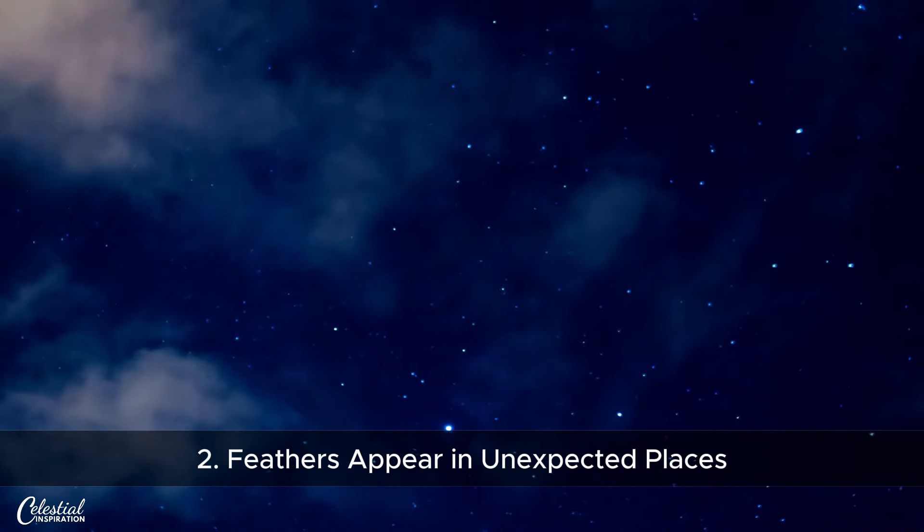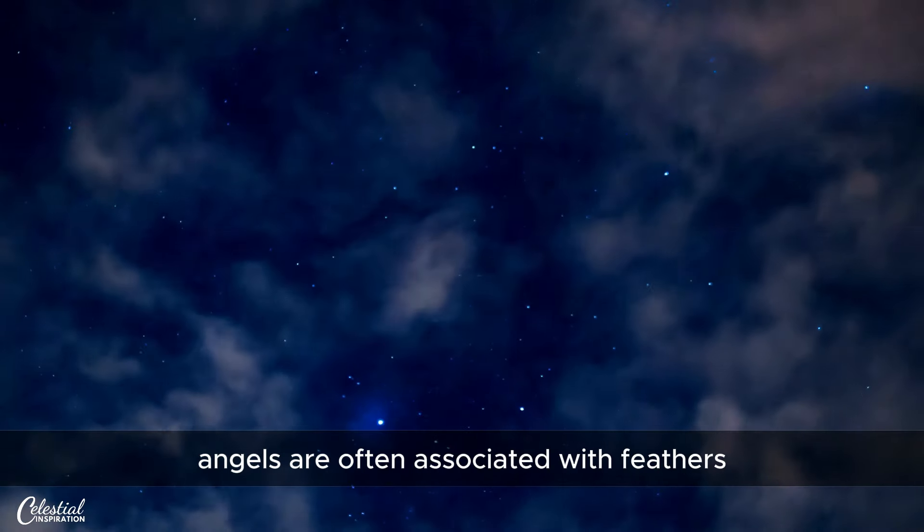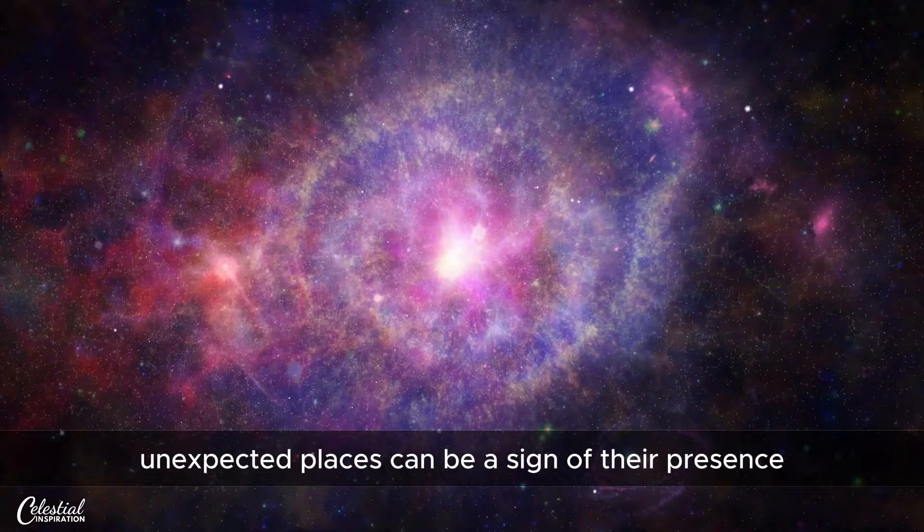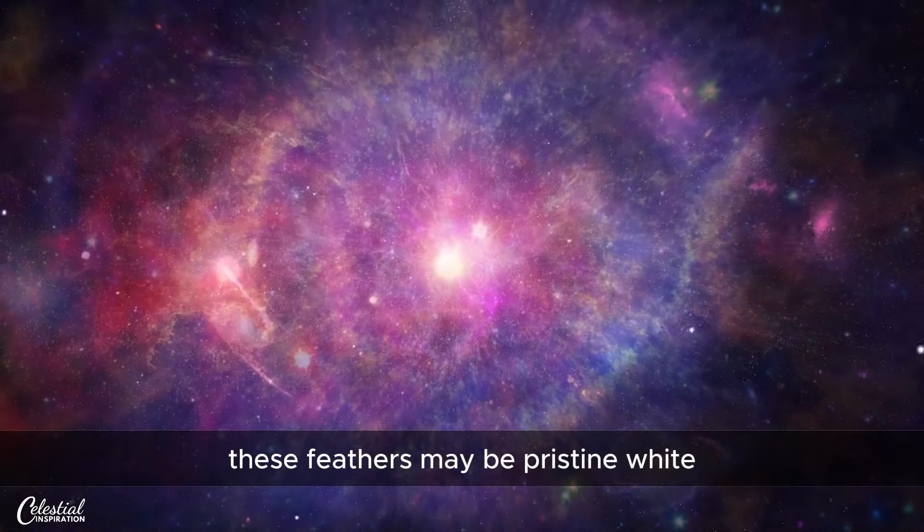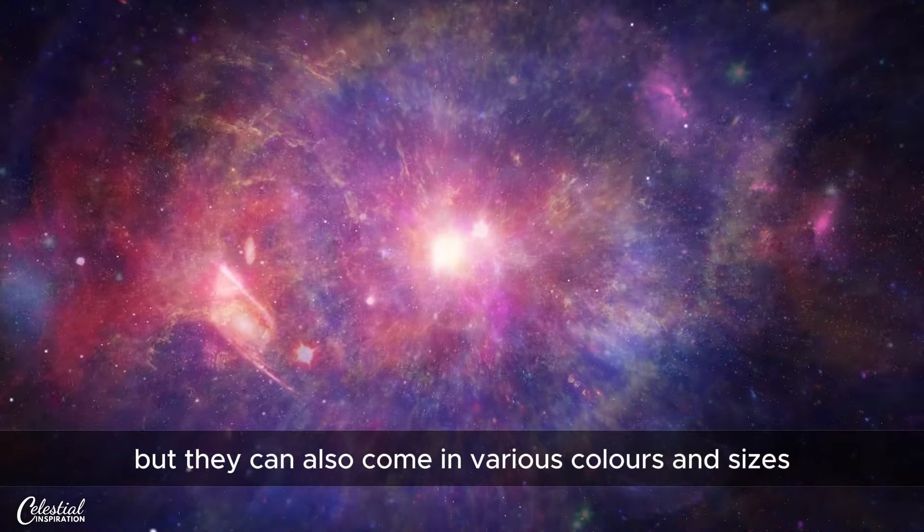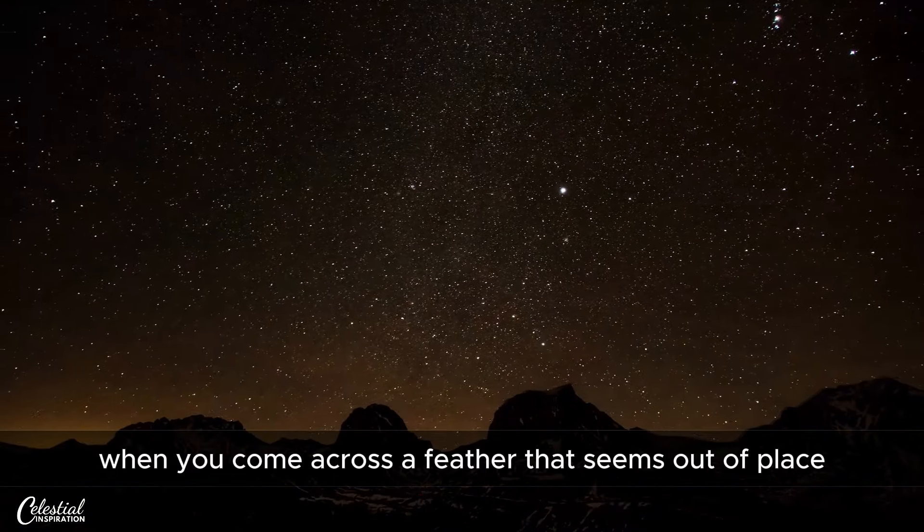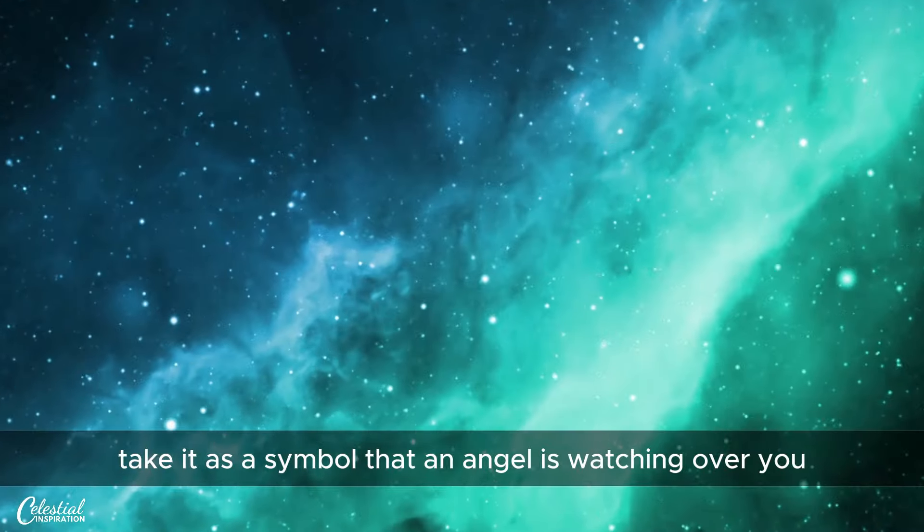Number 2: Feathers Appear in Unexpected Places. Angels are often associated with feathers, and finding feathers in unexpected places can be a sign of their presence. These feathers may be pristine white, but they can also come in various colors and sizes. When you come across a feather that seems out of place, take it as a symbol that an angel is watching over you.